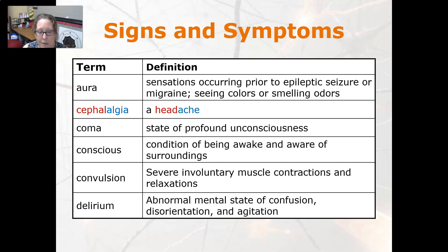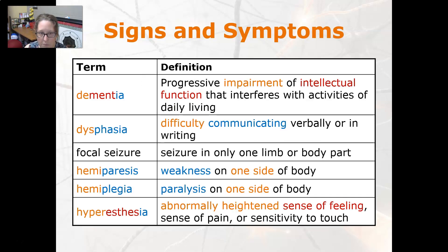Delirium is an abnormal mental state of confusion, disorientation, and agitation. Dementia is a progressive impairment of intellectual function that interferes with the activities of daily living.